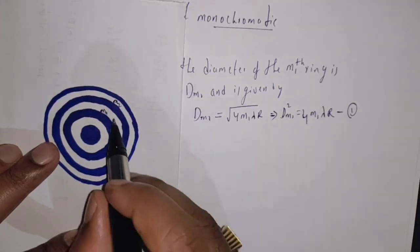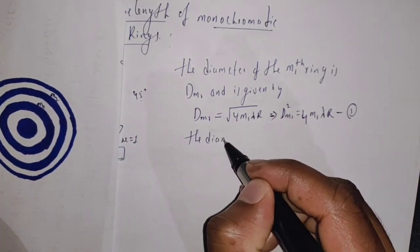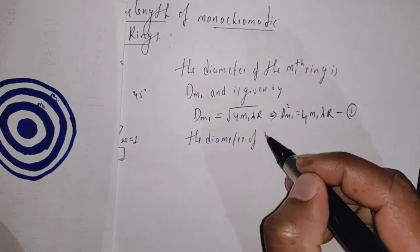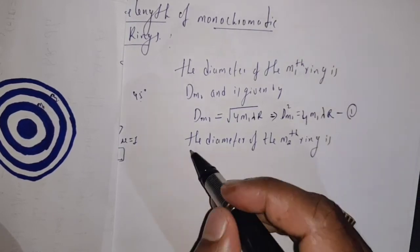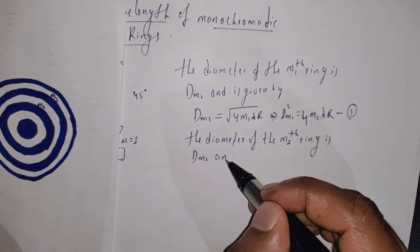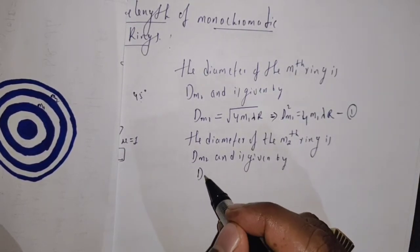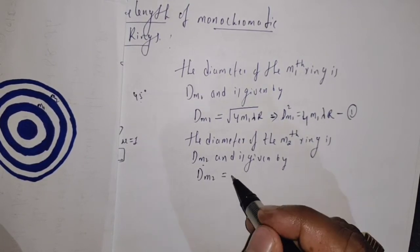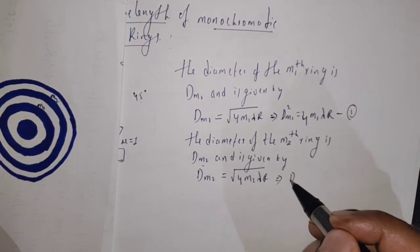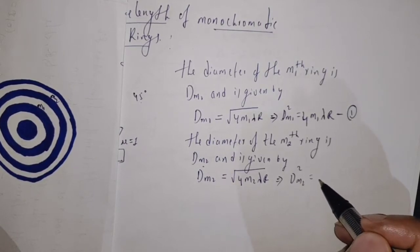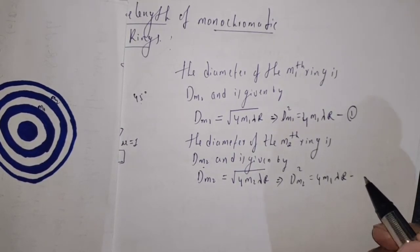Now let us write the diameter for the m2th dark band. The diameter of the m2th ring, Dm2, is given by: Dm2 squared equals 4 times m2 times lambda times R. Let us call this equation 2.